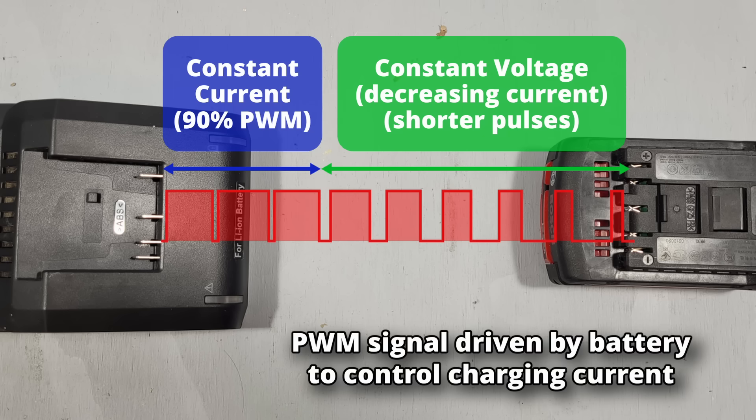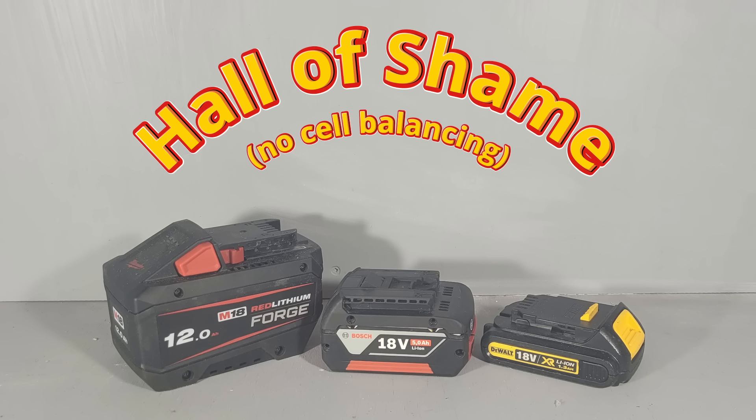For charging, seeing as they don't really use the charging pin, they could make this pin give a simple PWM signal so that they could have proper constant current, constant voltage charging. As for balancing, well, it's the same situation as Milwaukee. They've got all the hardware to balance, but they're choosing not to make use of it.